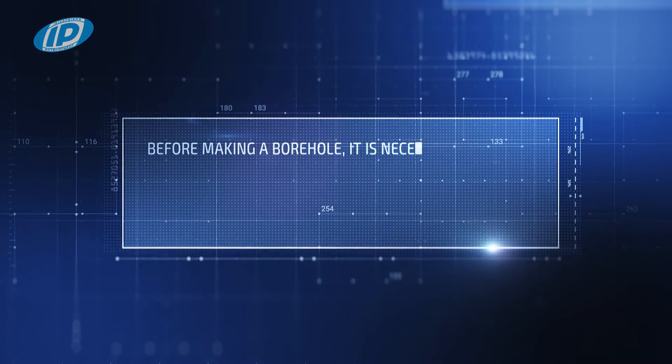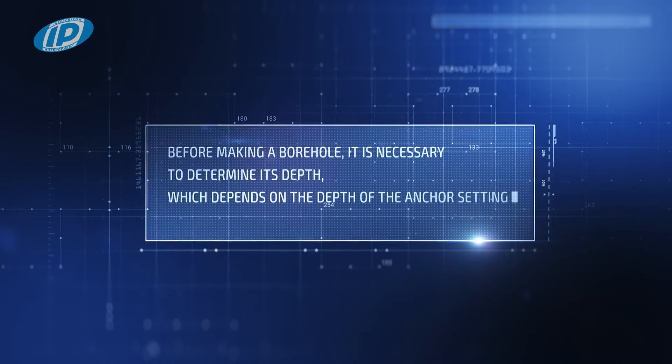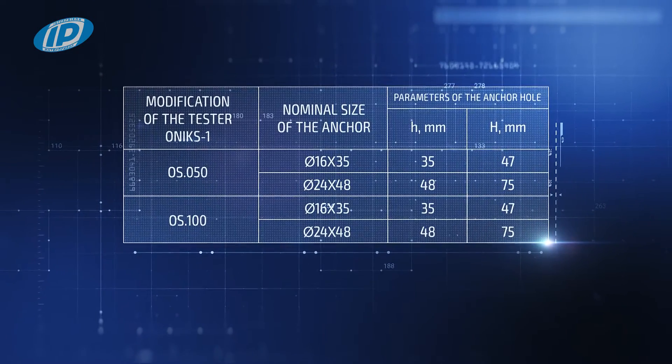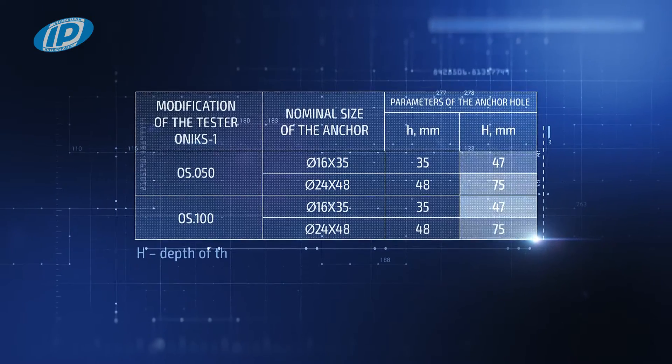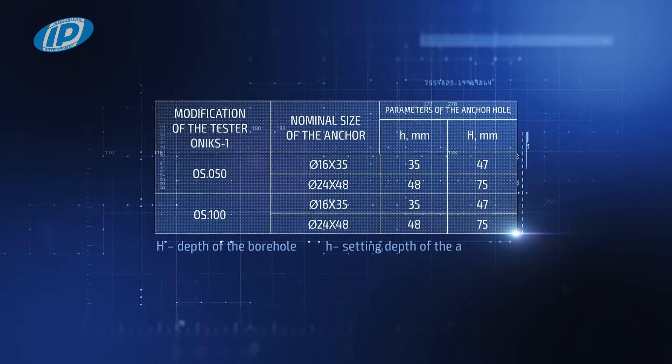Before making a borehole, it is necessary to determine its depth which depends on the depth of the anchor setting. The borehole depth is calculated on the basis of the following table, where capital H equals the depth of the borehole and small h equals the setting depth of the anchor.